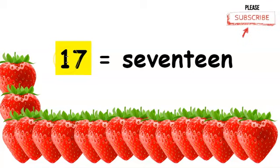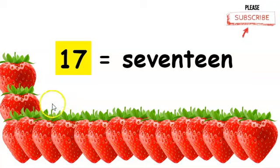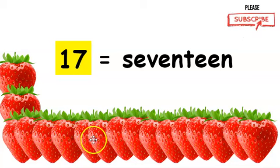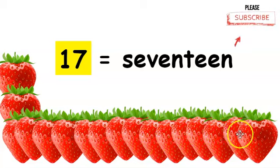The number seventeen. This is how you write the word seventeen. We should have seventeen strawberries below. Let's count from one to seventeen. One, two, three, four, five, six, seven, eight, nine, ten, eleven, twelve, thirteen, fourteen, fifteen, sixteen, seventeen strawberries.